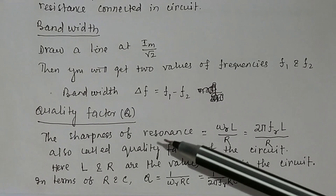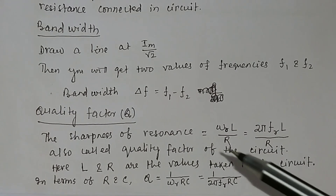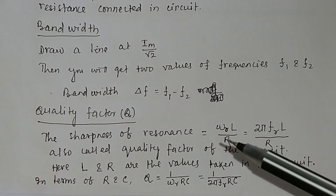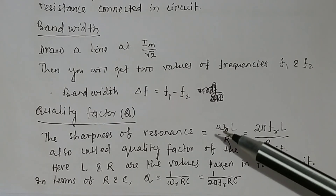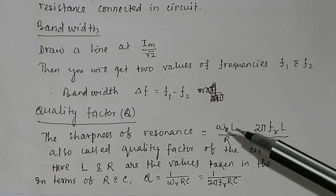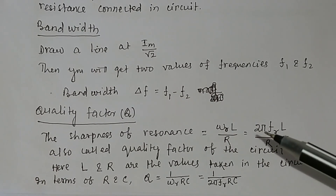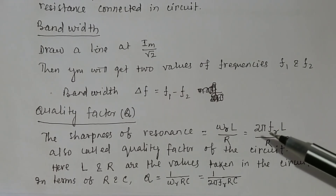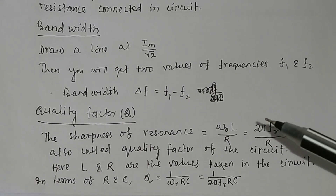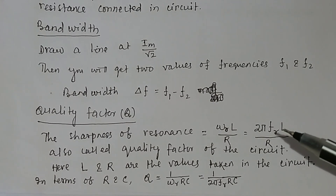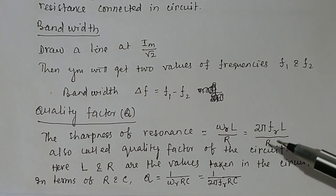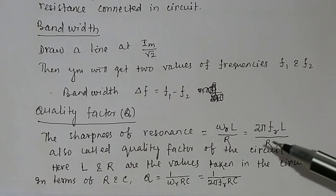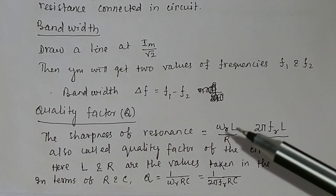What is quality factor Q? The sharpness of resonance can be calculated as Q equals omega_R times L divided by R, where omega_R is the angular frequency at resonance, L is the inductance of the inductor, and R is the resistance. That is equal to 2 pi F_R L divided by R. The F_R value can be obtained from the frequency response graph, L is the given inductor value, and R is the resistance used in the experiment. Putting these values, you can calculate the quality factor.